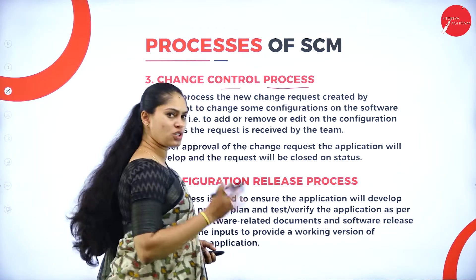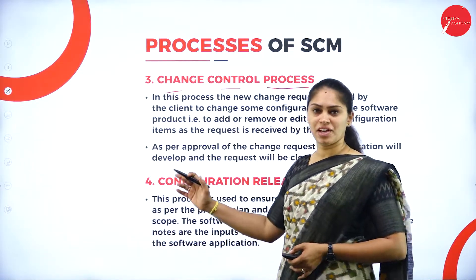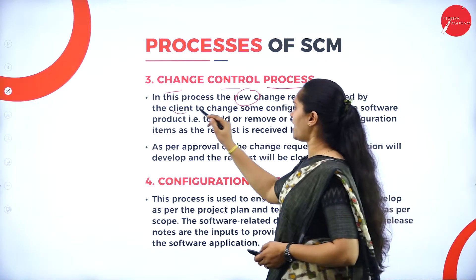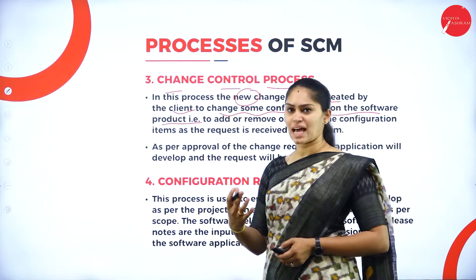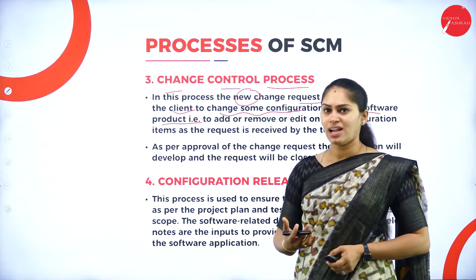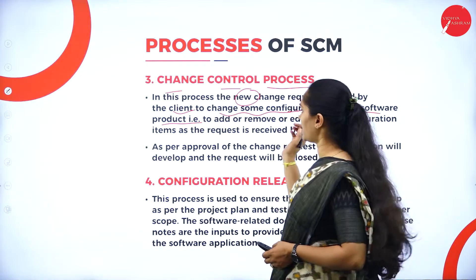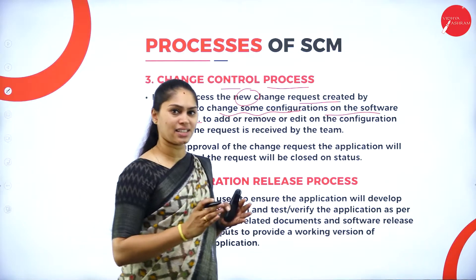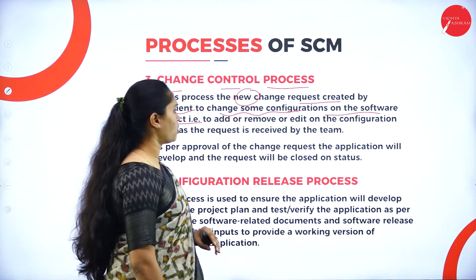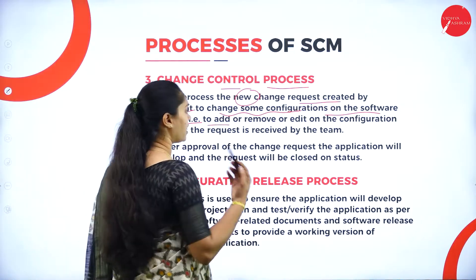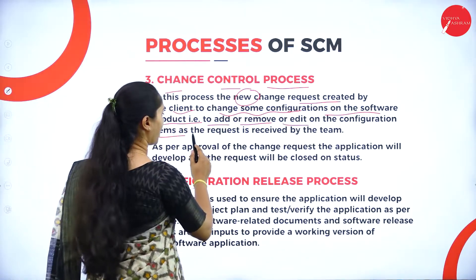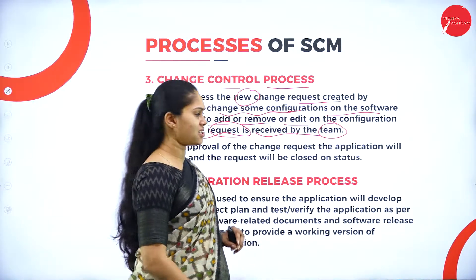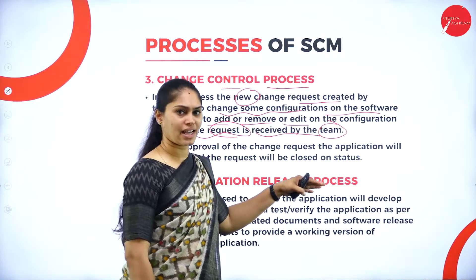The third stage is the change control process. Now we know which is the best version and we have different versions of a particular product. In this process, a new change request is created by the client to change some configuration on the software product. A user may not like the version that was produced, so they may come up with new changes — if they wanted to delete, update, or modify the content. They will come up with certain requirements — what they can add, remove, or edit on the configuration item. Based on the request received by the team, they are going to change the configuration.